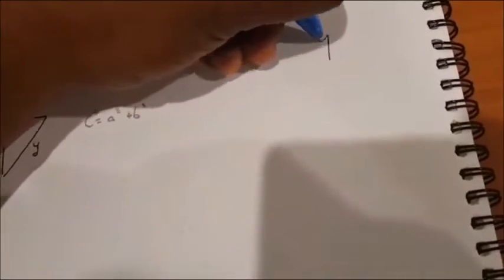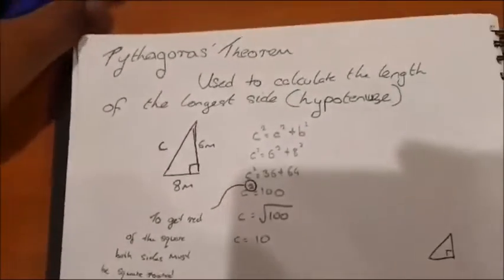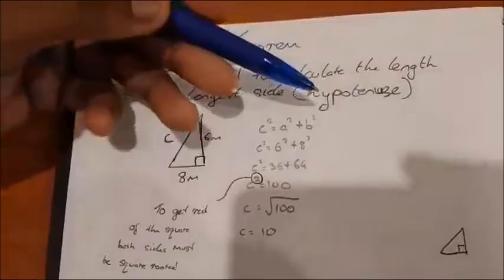If you draw a right-angled triangle like so, the hypotenuse is the longer side, so it's this side here. It's the longer side, which is the hypotenuse.